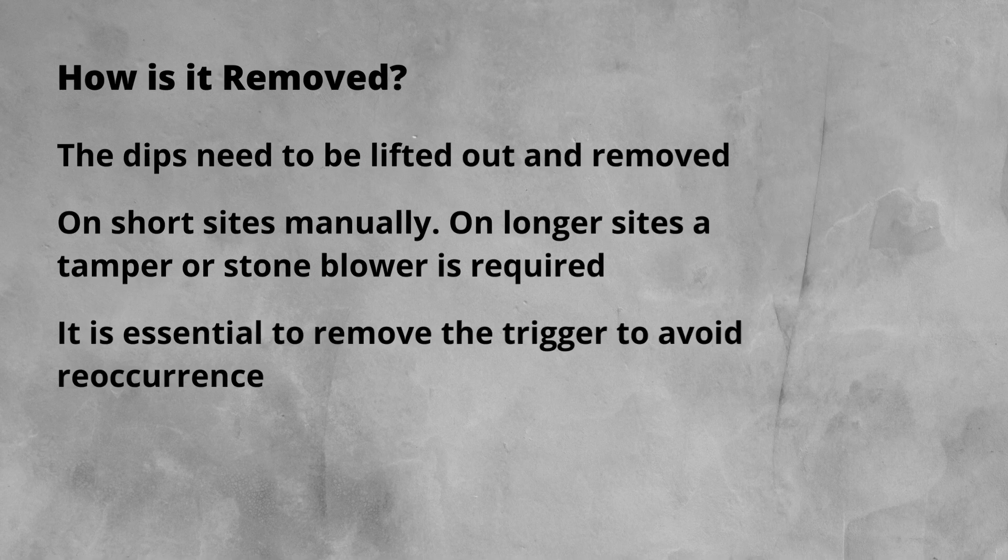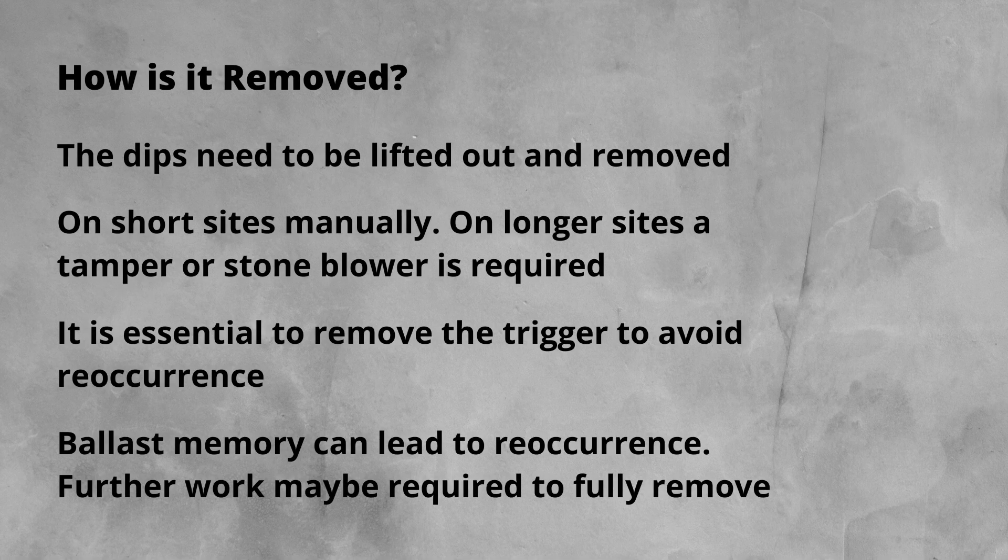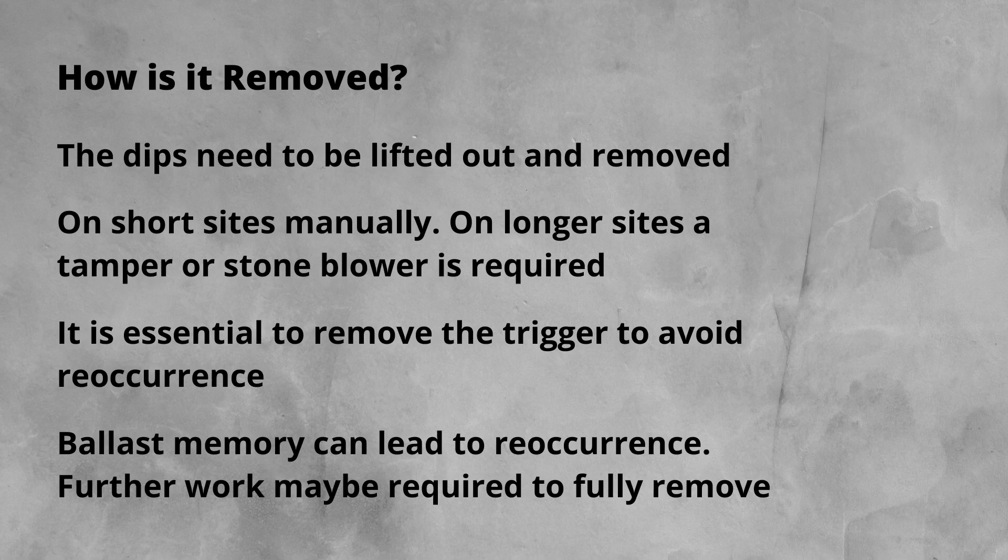A concept known as ballast memory can be an issue here. It is common for voiding to return in the same area due to the ballast returning to its original position after the remedial work is undertaken. For this reason, complete renewal of the ballast in the area or resiting of rail joints that keep dipping is required to overcome the ballast memory.